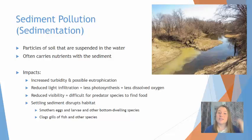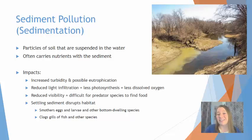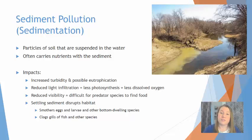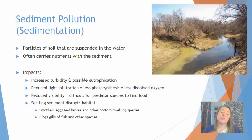With less sunlight coming into the water column, the plants in that water column are not going to be able to do as much photosynthesis, which means those plants are adding less dissolved oxygen into the water. The reduced visibility from sediment pollution also makes it difficult for predator species to find their prey. All of this sediment will disrupt the habitat of the ecosystem — it will smother eggs or bottom-dwelling species and clog the gills of fish, making it difficult for those fish to breathe.